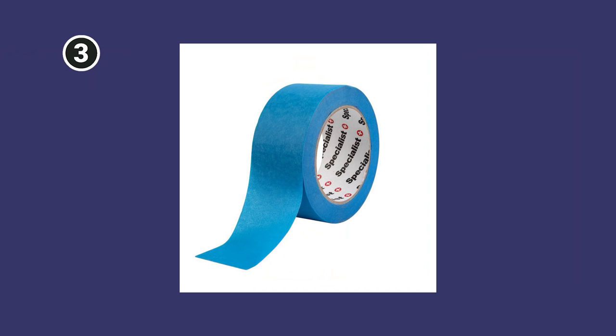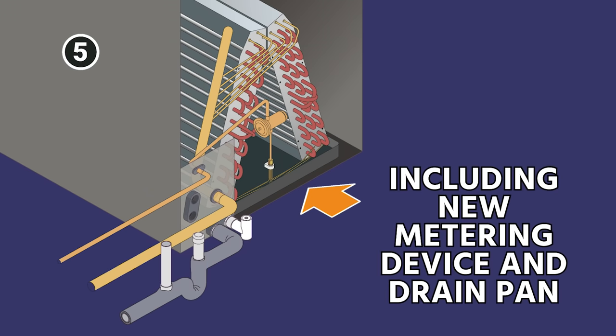I like to keep a little bit of blue masking tape and just kind of have that in my tool bag so that way I can just block it. And again, masking tape is not going to keep everything out, but it will keep at least particles out. Next, you're going to put the new evaporator coil in, including a new metering device and drain pan.